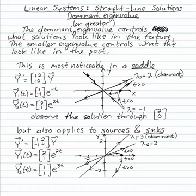This is most noticeable in a saddle. So here's a system that's a saddle. I'll let you compute the eigenvalues: minus 1 and 2, and the eigenvectors [1, -1] and [2, 1]. We've used this example before. So these are the straight-line solutions. One solution is growing outward from the origin, and one solution is decaying inward to the origin.